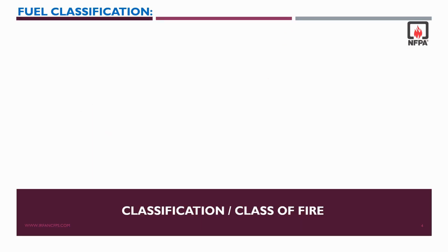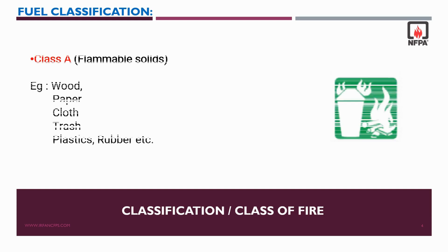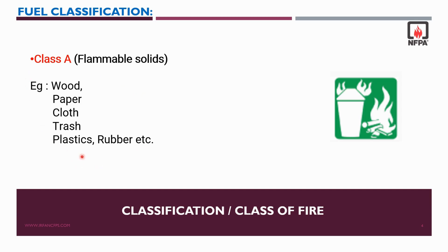Class A fires are fires in ordinary combustible materials such as wood, paper, cloth, trash, plastics, rubber, etc. Whenever you find fuel in these forms, it means we need to use a Class A fire extinguisher in order to extinguish the fire.